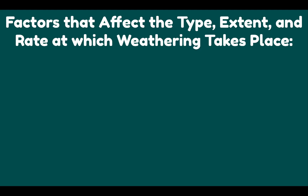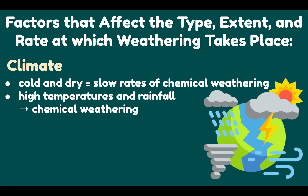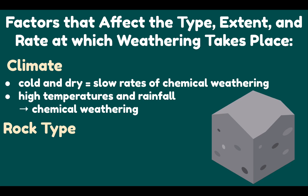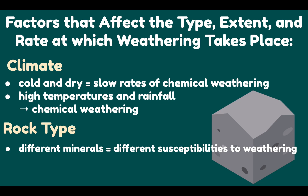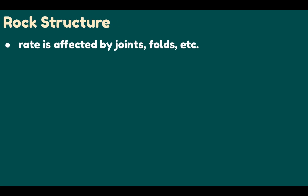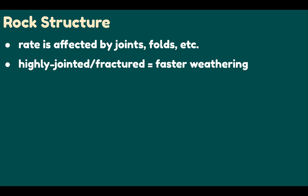Let's discuss the factors that affect the type, extent, and rate of weathering. The first is climate — areas that are cold and dry tend to have slow rates of chemical weathering, and the weathering is mostly physical. Chemical weathering is most active in areas with high temperature and rainfall. Next is rock type — the minerals that constitute rocks have different susceptibilities to weathering; those most stable to surface conditions will be most resistant. Rock structure also matters: the rate of weathering is affected by the presence of joints, folds, faults, and bedding planes through which agents of weathering enter a rock mass. Highly jointed or fractured rocks disintegrate faster than a solid mass of rock of the same dimension.